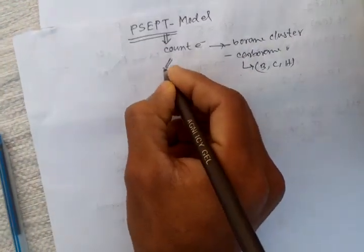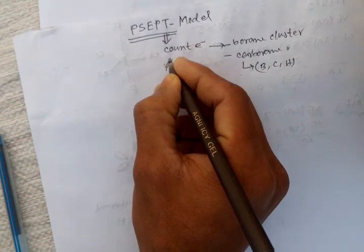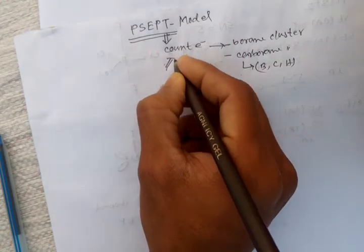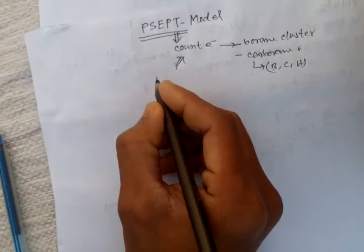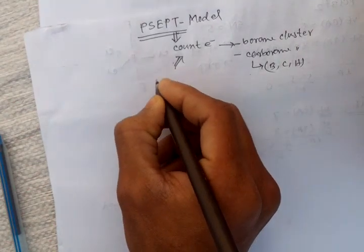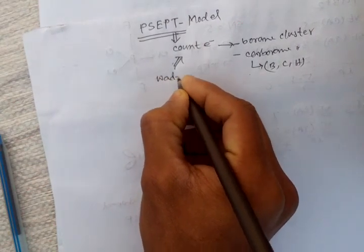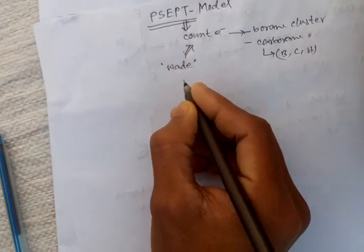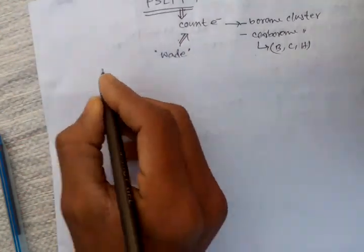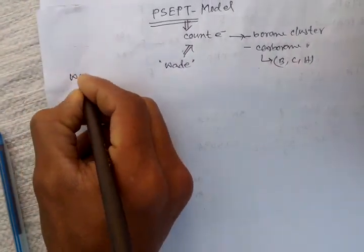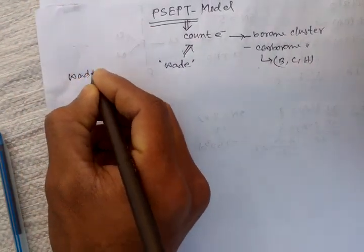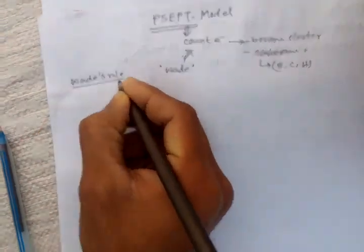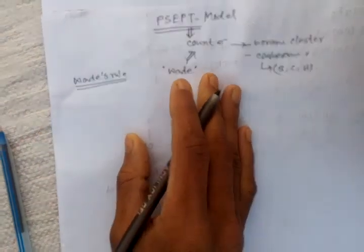These electron counting rules are formulated by scientist Wade. So what is Wade's rule? What is the criteria of Wade's rule?